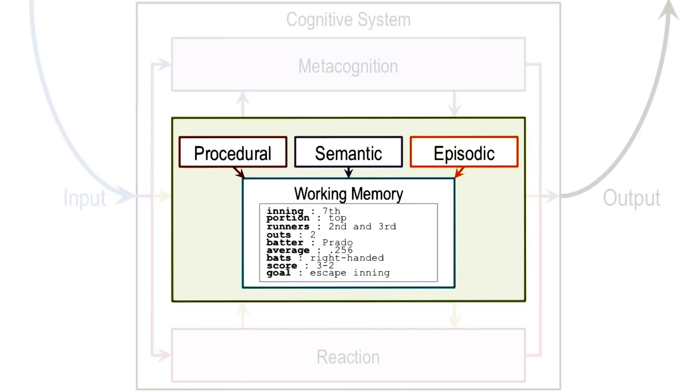We have actually come across the notion of frames earlier. When we were talking about production systems, you may recall we had a diagram like this, where we had procedural, semantic, and episodic knowledge. And the working memory contained a structure like this.